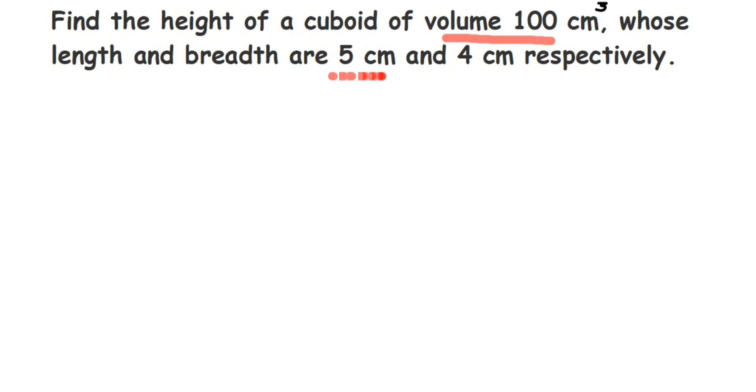So what we have to find out? We have to find out the height of the cuboid. So let's start with what is given. Here they have given length is equal to 5 centimeter, we have given breadth which is 4 centimeter, and they have also given the volume. Volume of cuboid is given which is 100 centimeter cube. What we have to find out? We have to find out the height.